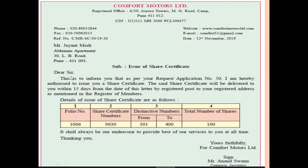After the inside address comes the subject: Issue of Share Certificate. Then the complimentary salutation: Dear Sir. The first paragraph reads: 'This is to inform you that as per your request application number 50, I am hereby authorized to issue you a share certificate.' The secretary is writing that as per the allottee's request application, she is authorized to issue the share certificate. The said share certificate will be delivered within 15 days from the date of this letter by registered post to your registered address as mentioned in the register of members.